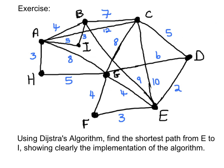What I'd like you to do now is attempt this exercise yourself. Take out a pen and paper and copy down this diagram on the screen. Answer this question: using Dijkstra's algorithm, find the shortest path from E to I, showing clearly the implementation of the algorithm. Pause the video now, give yourself some time to attempt this, and when you're finished, turn the video back on and I will go through the solution with you.